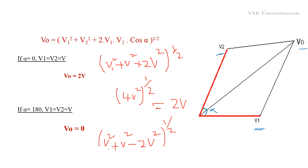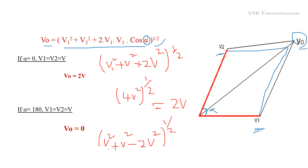The phasor sum of secondary winding voltages V1 and V2 gives the controlled output voltage V0, which is given as: V0 = (V1² + V2² + 2·V1·V2·cos α)^(1/2). By controlling the phasor difference alpha between V1 and V2, we can get the controlled AC output voltage V0.